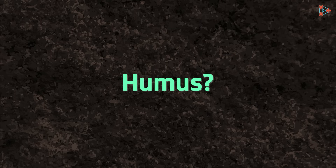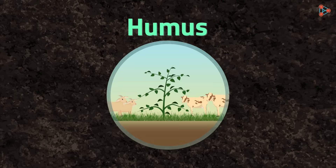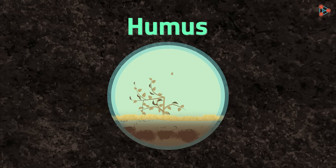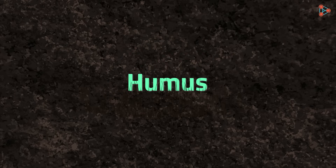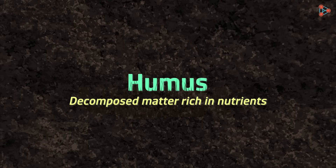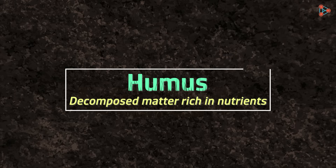What exactly is humus? As we know, all living things die and their remains are decomposed, returning nutrients back to the soil. The microbes help in this process of decomposition. This decomposed matter is rich in nutrients and is known as humus — it is what plants depend on for nutrition.